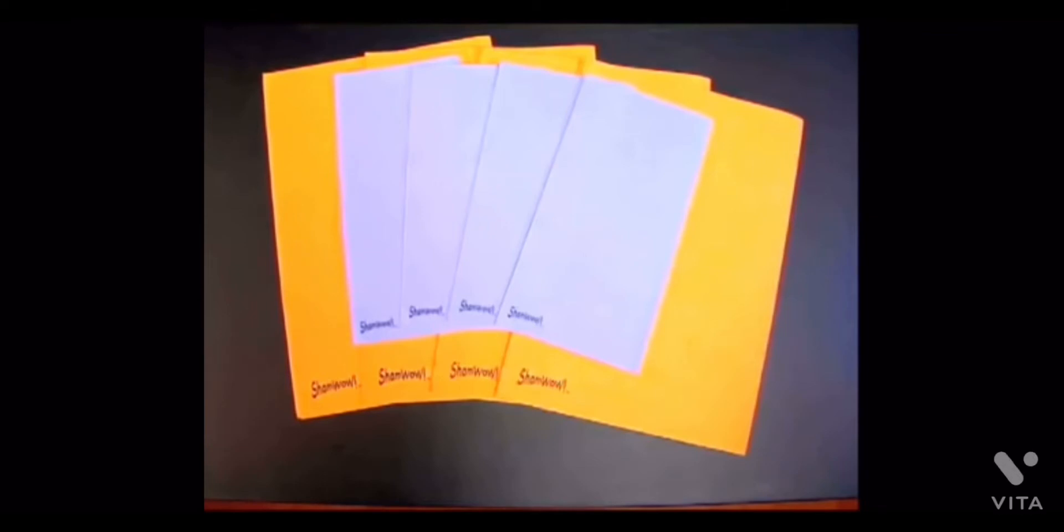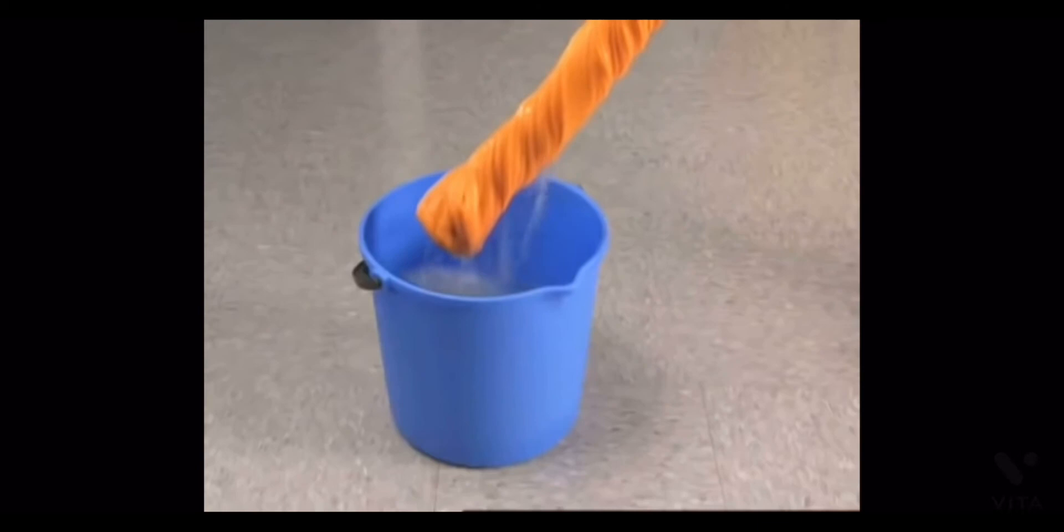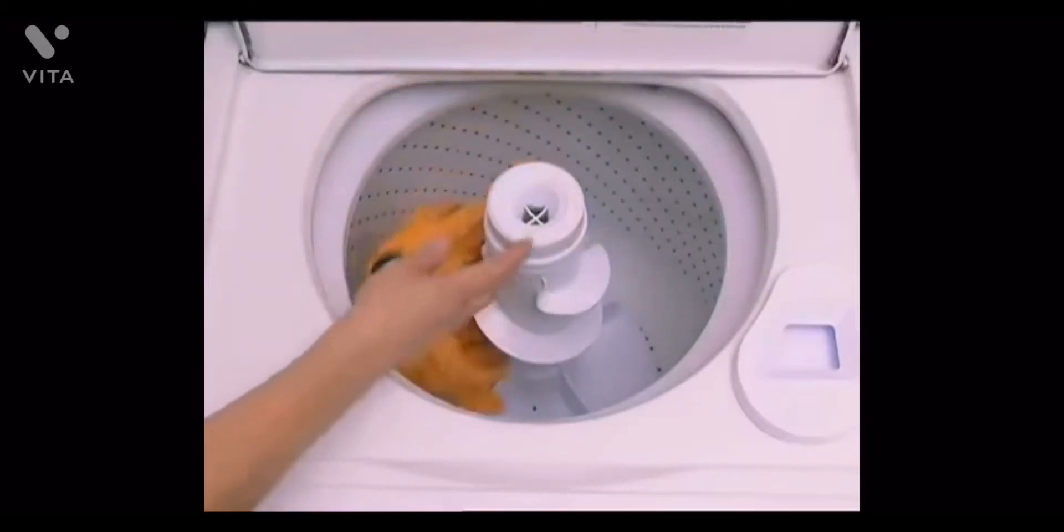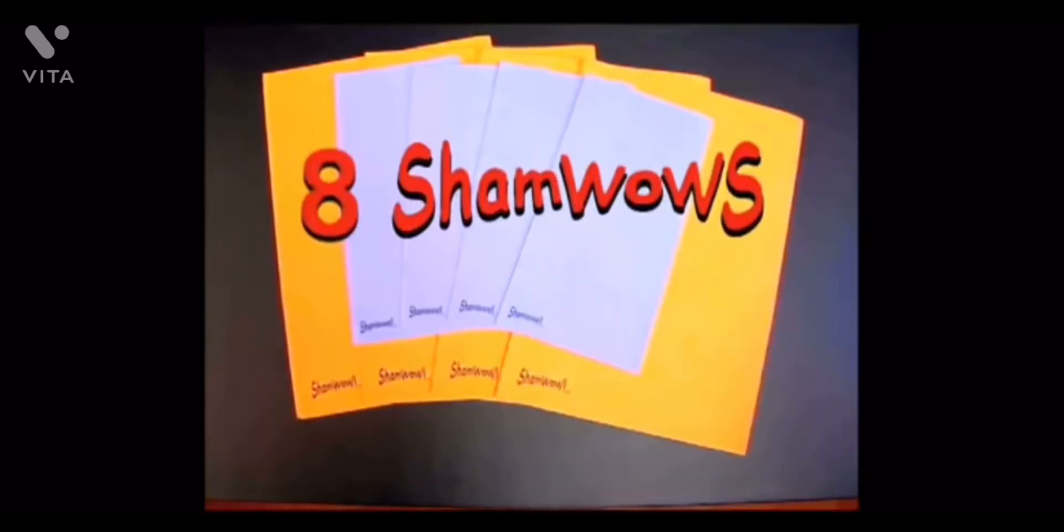ShamWows! You'll get the ShamWow Mop. A vacuum, broom, and mop all in one. Never get down on your hands and knees again. Just twist the handle to wring it out. Throw it in the washing machine for easy cleaning. Also great for pet hairs. A regular mop pushes the dirt. This'll capture it. So that's 8 ShamWows for $19.95.